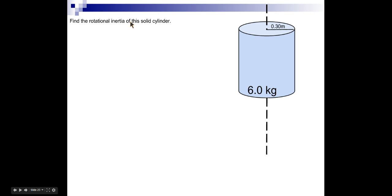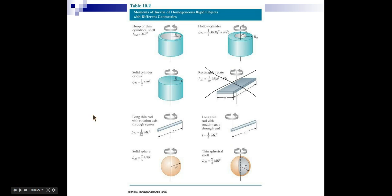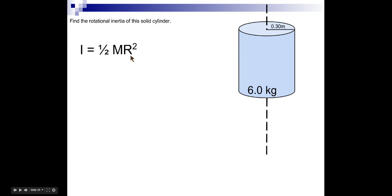All right, let's find the rotational inertia of this solid cylinder. So we've got to go back and look at the equation for a solid cylinder or disk. It's 1.5 mR squared. So 1.5 mR squared is our equation. We're going to spin it about its center of mass. That means right in the middle.